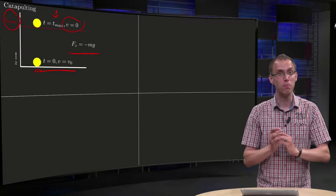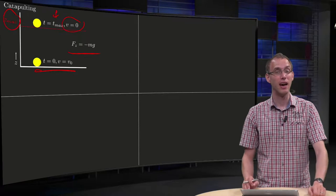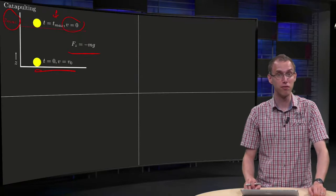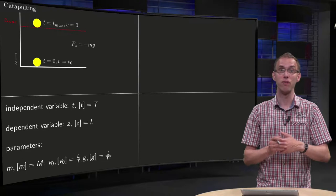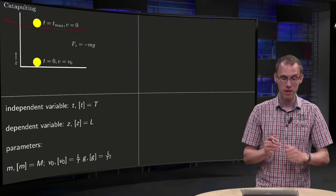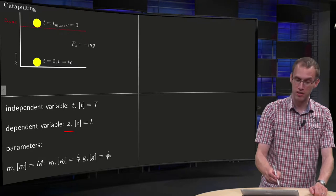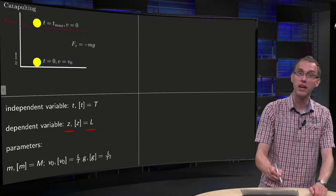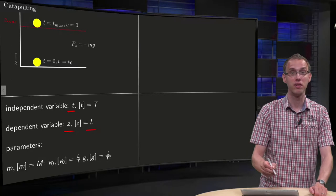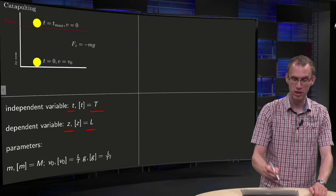First of all we want to apply Buckingham to see how many dimensionless variables we can form. So we evaluate, we are looking for z of t. So we have a dependent variable z with dimension L, as independent variable we have t with dimension capital T.